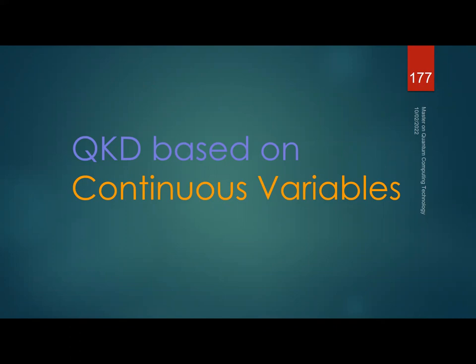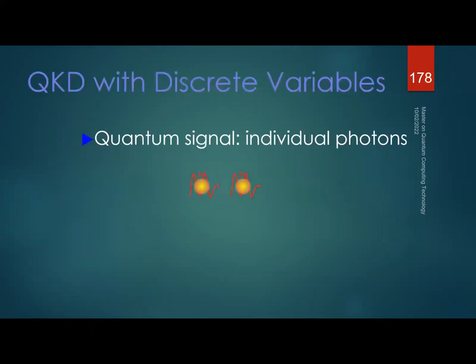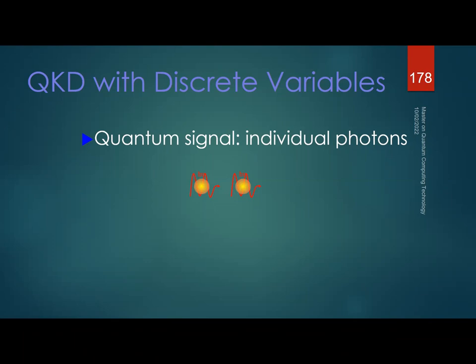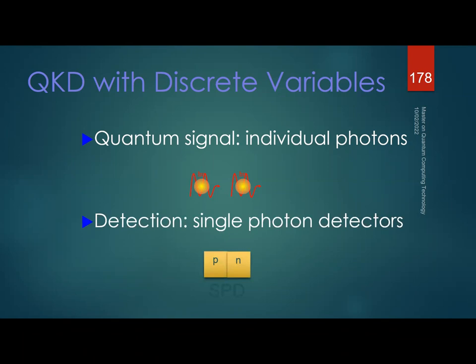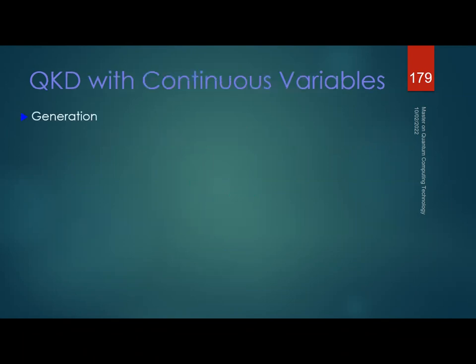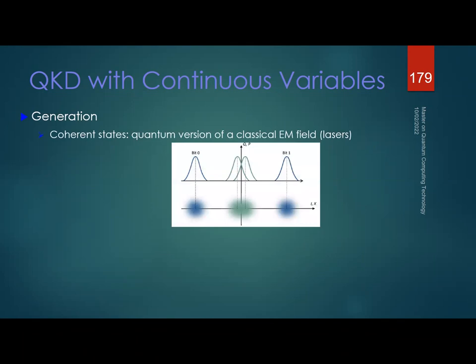We've also talked about continuous-variable QKD (CV-QKD). All the protocols I described before use discrete variables — single photons detected by single-photon detectors. In continuous-variable systems, the quantum signal consists of coherent states — a quantum version of a classical electromagnetic field with roughly 10^20 photons behaving quantum mechanically.